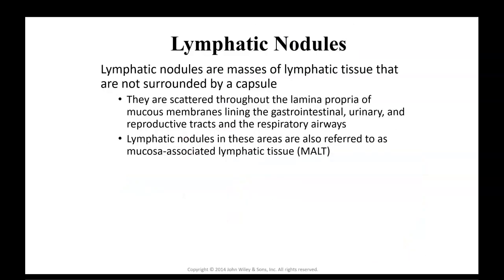Lymphatic nodules are simply masses of lymphatic tissue that are not surrounded by a capsule — this is the difference from lymph nodes, which do have a capsule. They're scattered throughout the lamina propria of mucous membranes that line areas such as the gastrointestinal area, the urinary section, and reproductive and respiratory tract airways. Lymphatic nodules in these areas are also referred to as mucosa-associated lymphatic tissue, often called MALT.